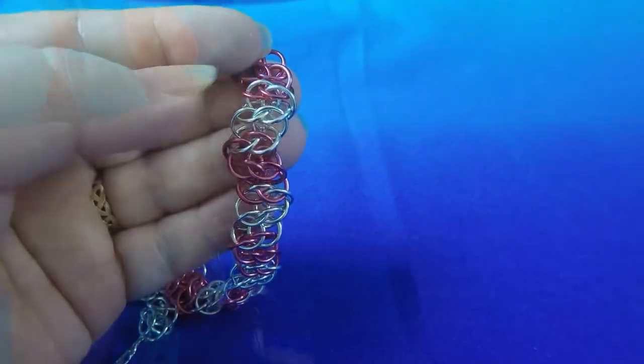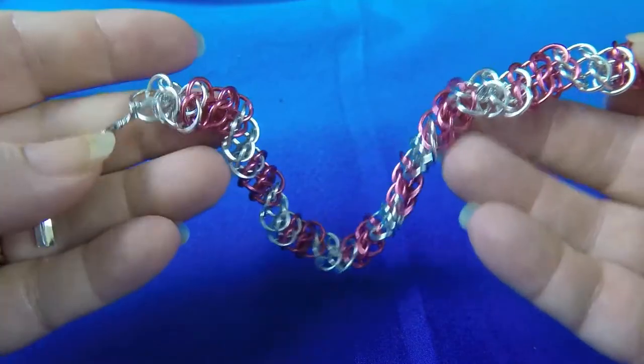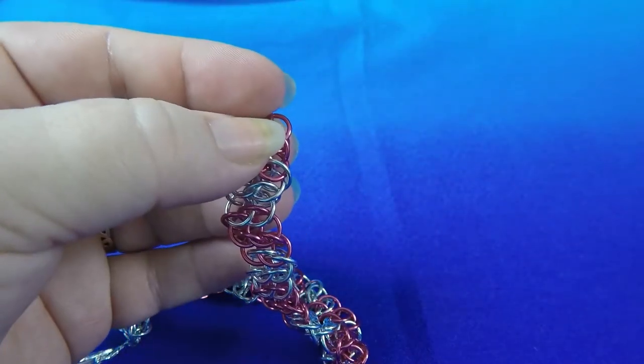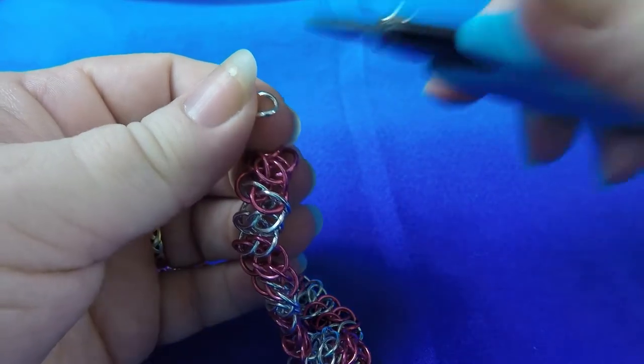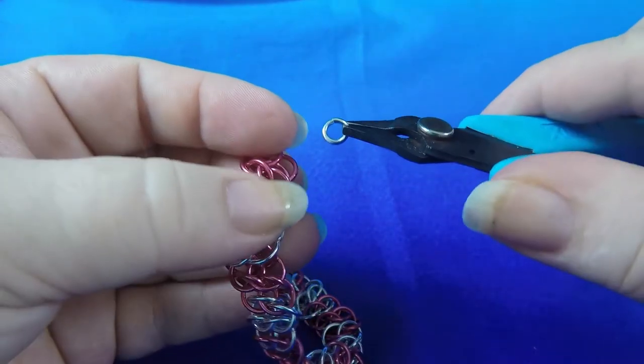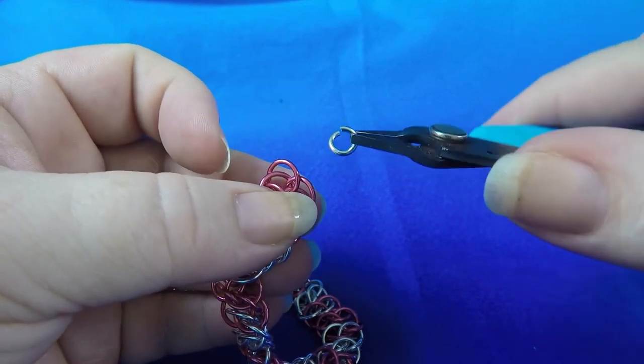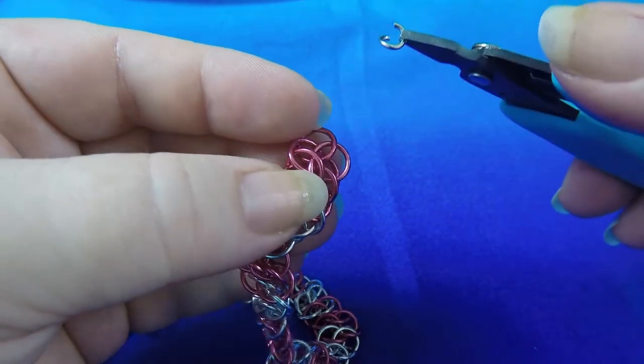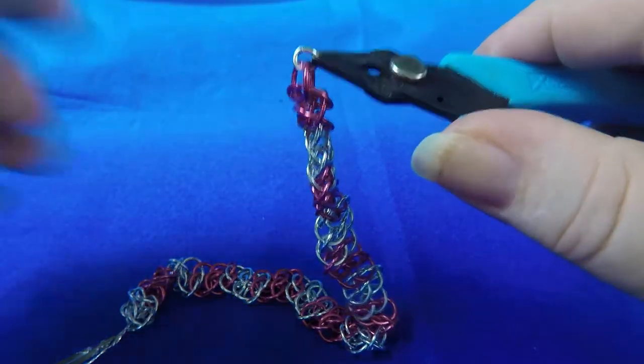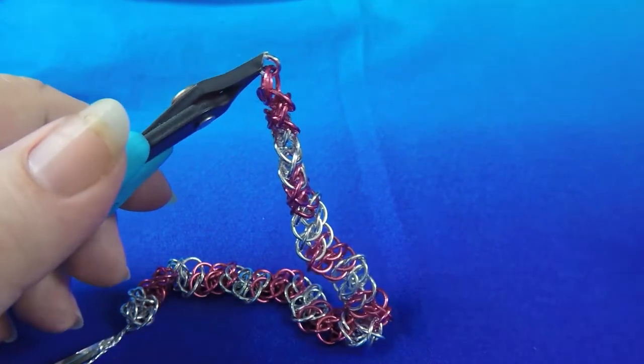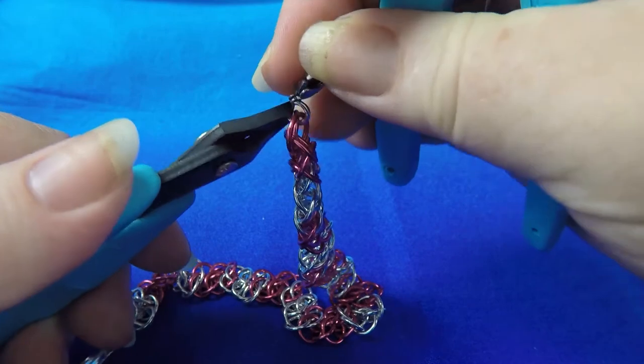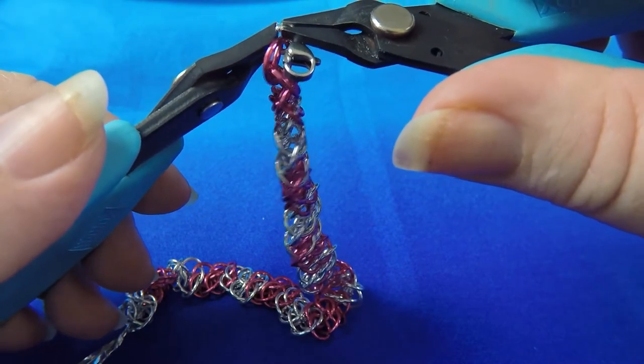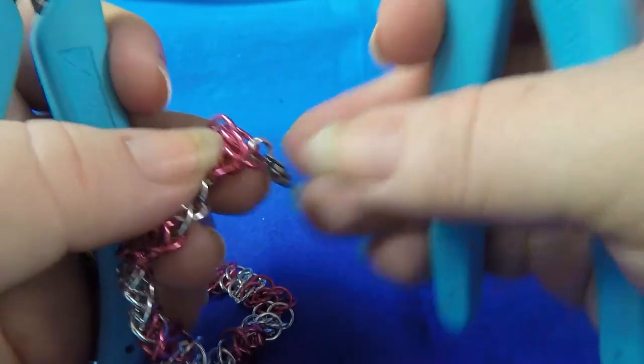So once you've reached the length that you require, in this case it's 20 centimeters or approximately eight inches, you'll be wanting to add your clasp. So what you just need to do is take up the smaller of your ring ID. In this case I'm using 16 gauge 1.2 millimeter 3.5 millimeter ID ring. It doesn't have to be this size, just use whatever you have on hand, but this is my preference for attaching clasps. So what we're going to do is we're just going to feed this through the eye as we have been doing just like that, and then before we actually close this ring up we're going to pop our lobster clasp on and close the ring up.